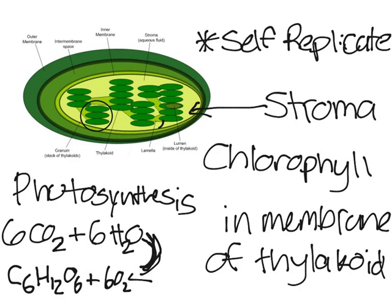It's important to remember that only primary producers have chloroplasts. If you imagine an animal, it can't make its own food — it has to eat others. Imagine humans: we can't just absorb energy from the sun and magically make glucose. Plants that have chloroplasts and make their own food are called autotrophs, which means they feed and make food by themselves.